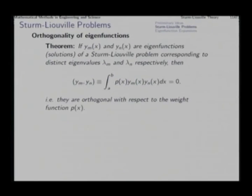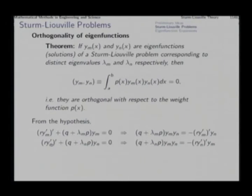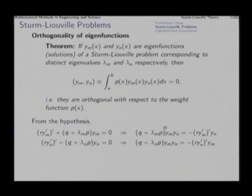This can be proved quite easily. If y_m and y_n are both solutions of the boundary value problem, they are in particular solutions of the differential equation. So y_m satisfies the equation with eigenvalue λ_m; multiplying by y_n gives one equation. Similarly, y_n satisfies the equation with λ_n; multiplying by y_m gives another. Simply subtracting these two, the Q terms cancel, and we get (λ_m − λ_n) p y_m y_n on the left.